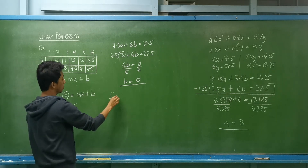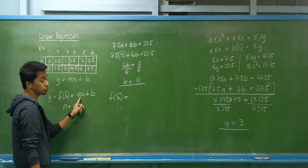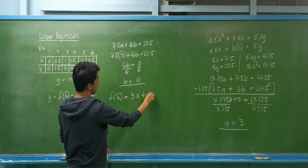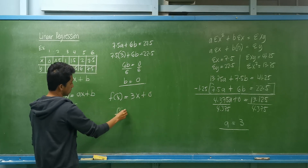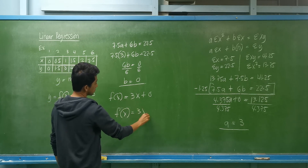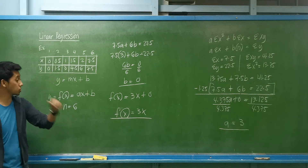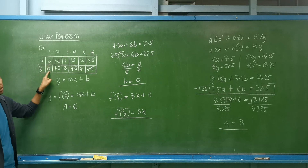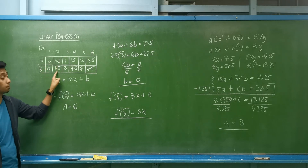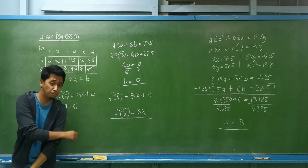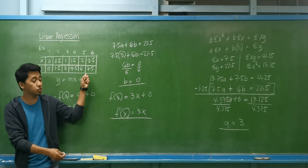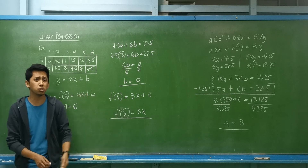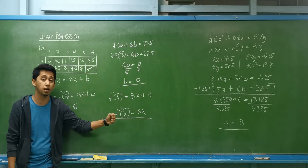So our equation or function is f(x) = 3x + 0, which simplifies to f(x) = 3x. To check its accuracy: 3×0 = 0, 3×0.5 = 1.5, 3×1 = 3 — this function fits the data exactly. In most cases with curve fitting, this is not always the case.